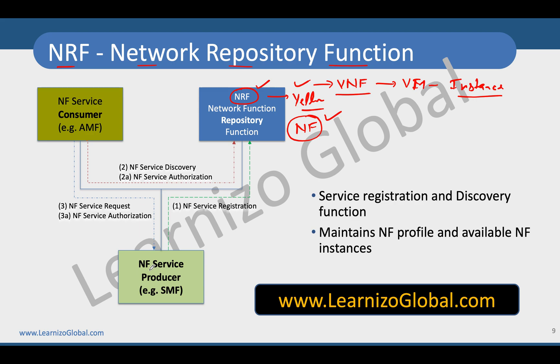One type is referred to as NF producers, which typically takes care of providing some services. In this example, we have taken SMF as the service producer.